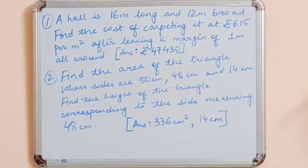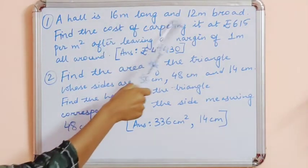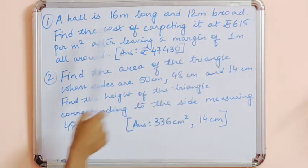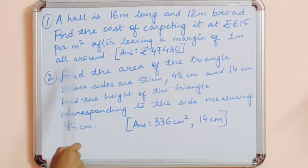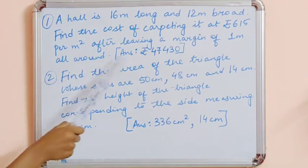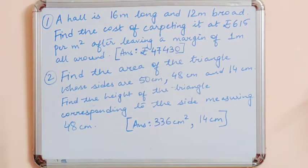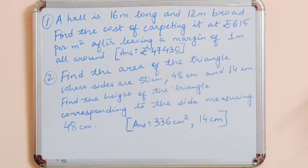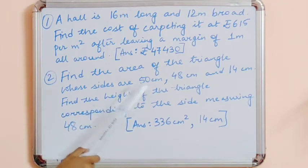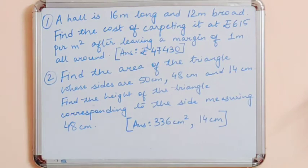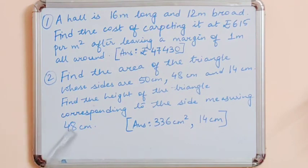Here are some practice questions. Number 1: a hall is 16 m long and 12 m broad; find the cost of carpeting at ₹615 per m² after leaving a margin of 1 m all around — answer: ₹47,430. Number 2: find the area of the triangle with sides 50 cm, 48 cm, and 14 cm, and the height corresponding to the side 48 cm — area = 336 cm², height = 14 cm. Note: use 48 cm as the base here, not the largest side.